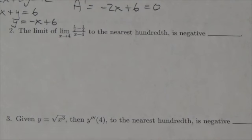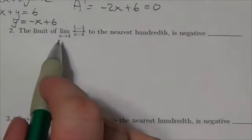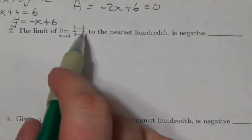Okay, American response number two. We're going to find a limit as x approaches 4 of 1 over x minus 1 quarter.